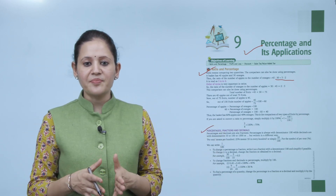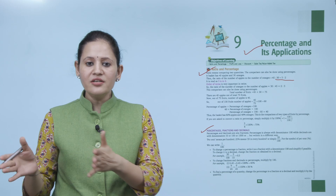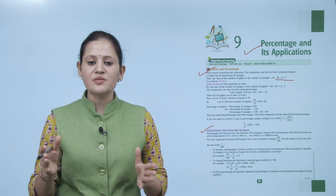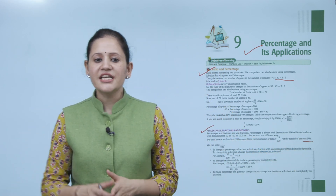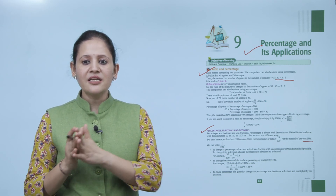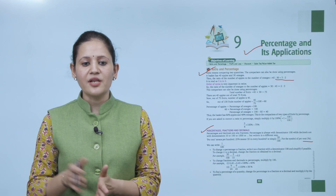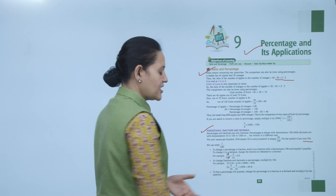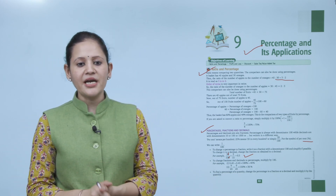Percentage and decimals are also fractions. Percentage always has denominator 100, while decimals have denominator 10, 100, 1000, etc. Percentage means per 100 — 25% means 25 of every 100. To change a percentage to a fraction, write it with denominator 100 and simplify. For example, 30/100 = 3/10 = 0.3.